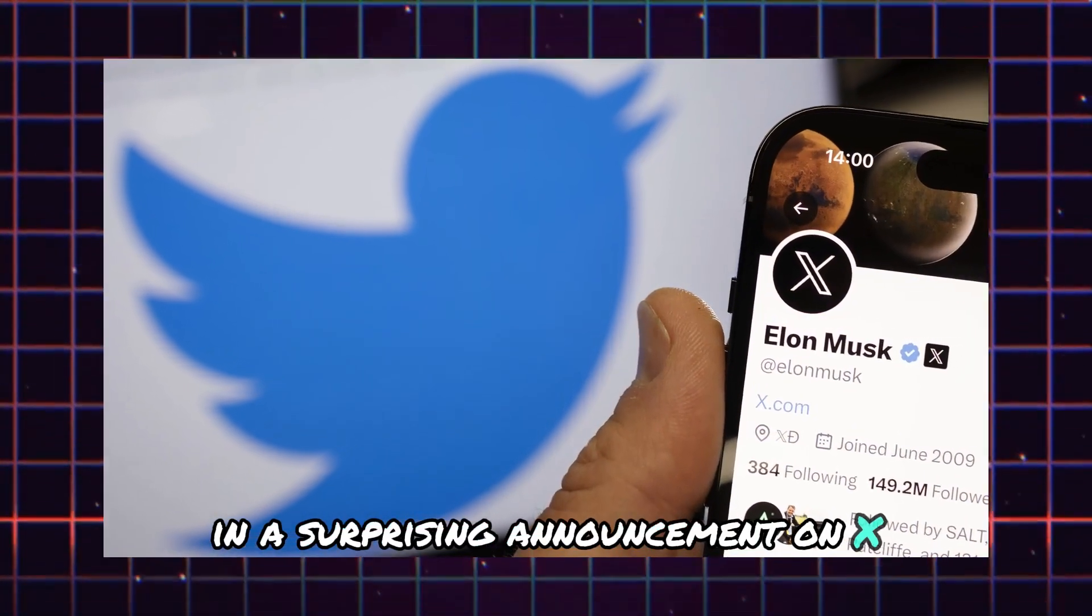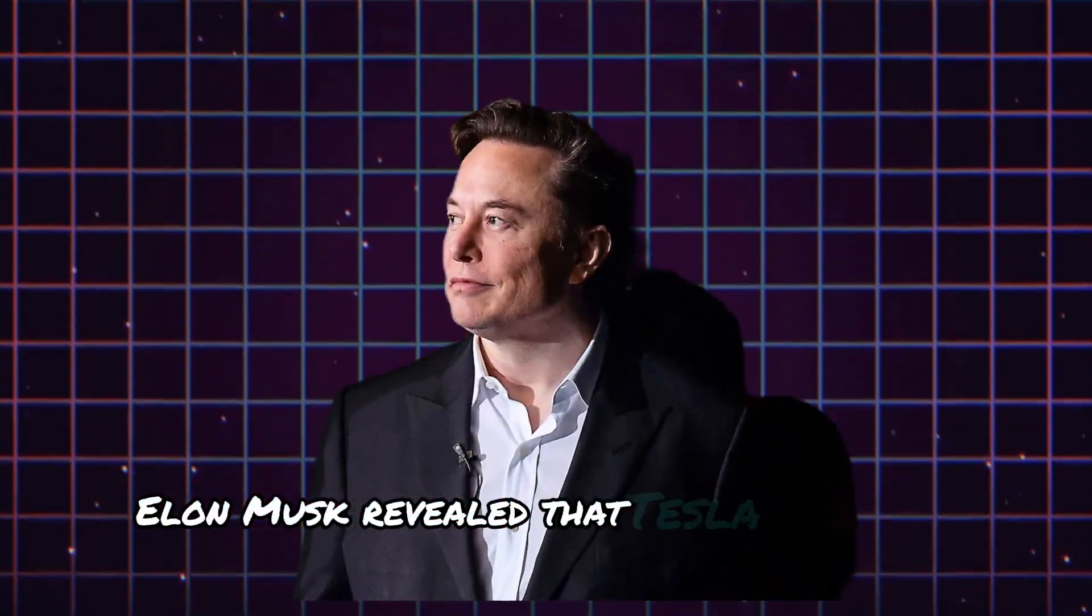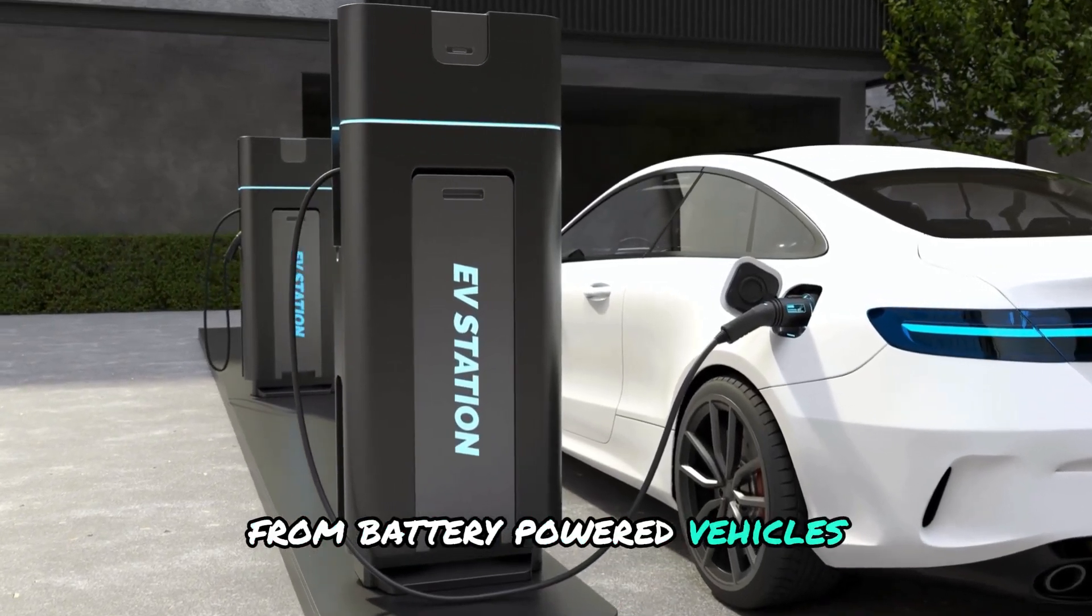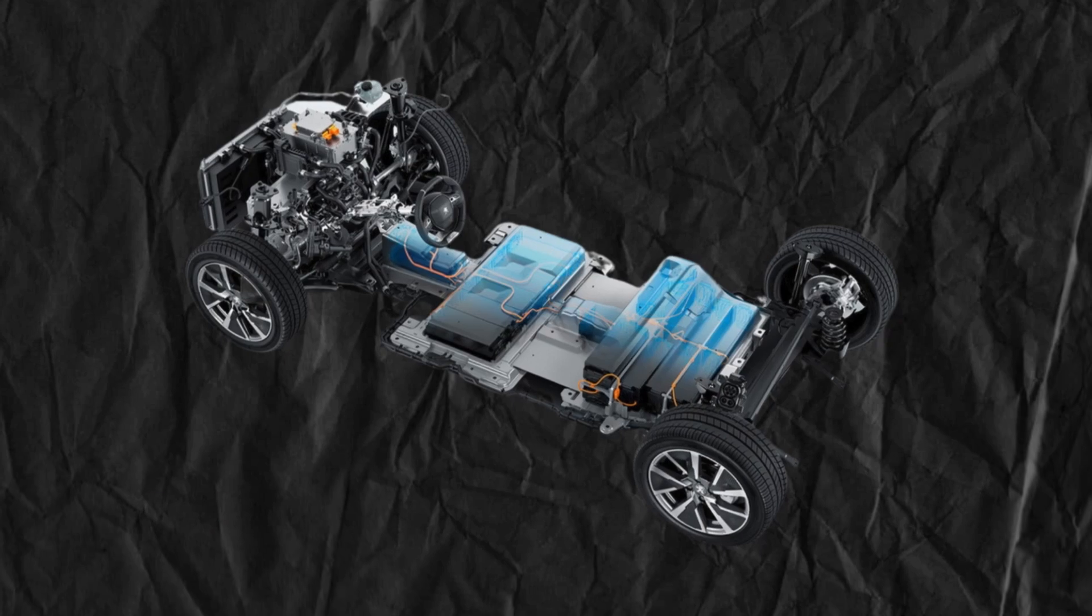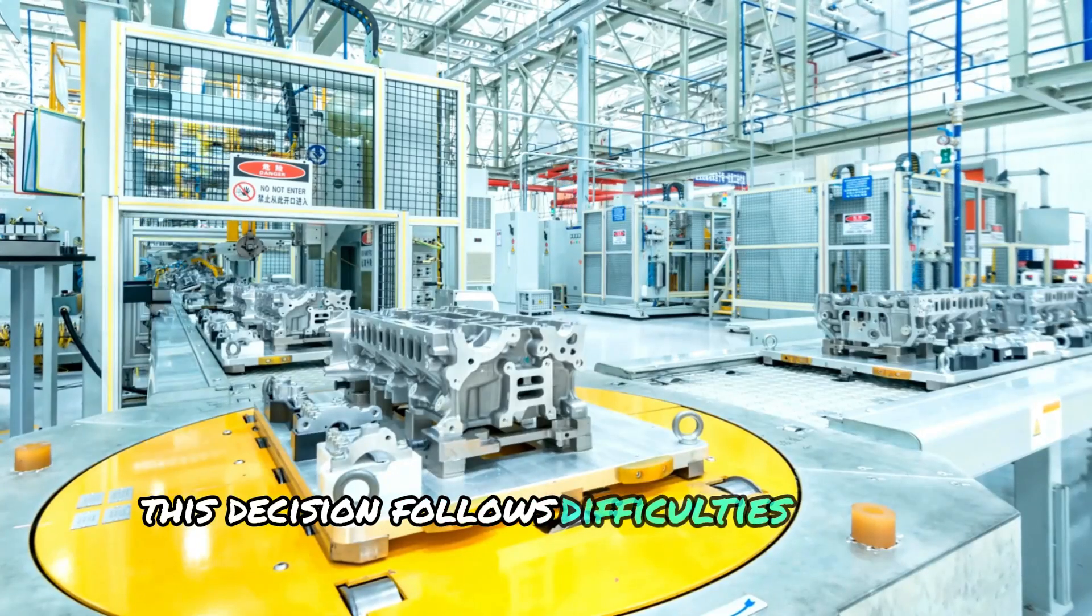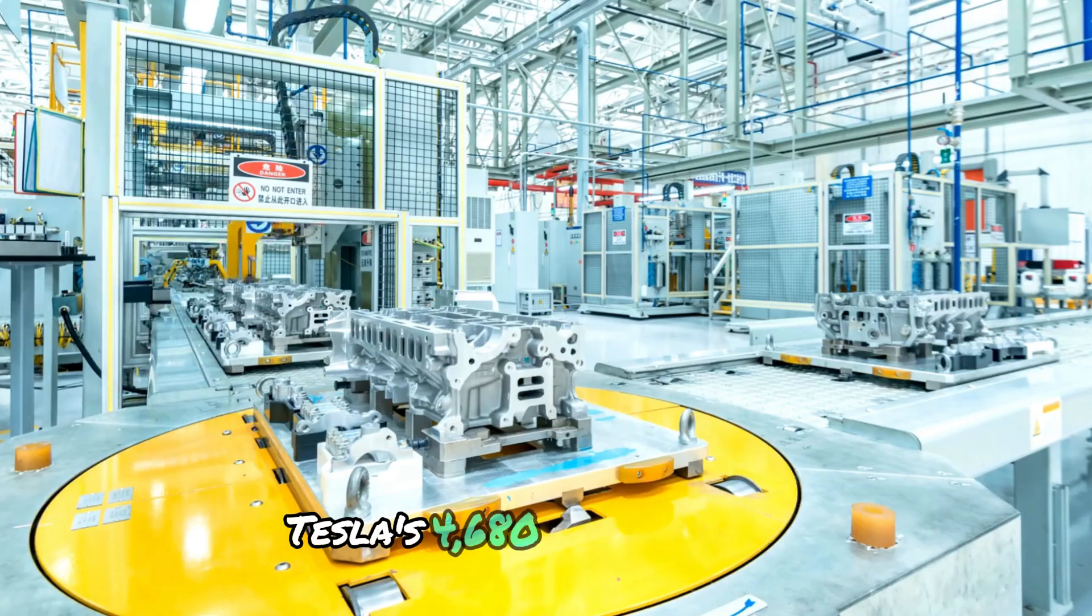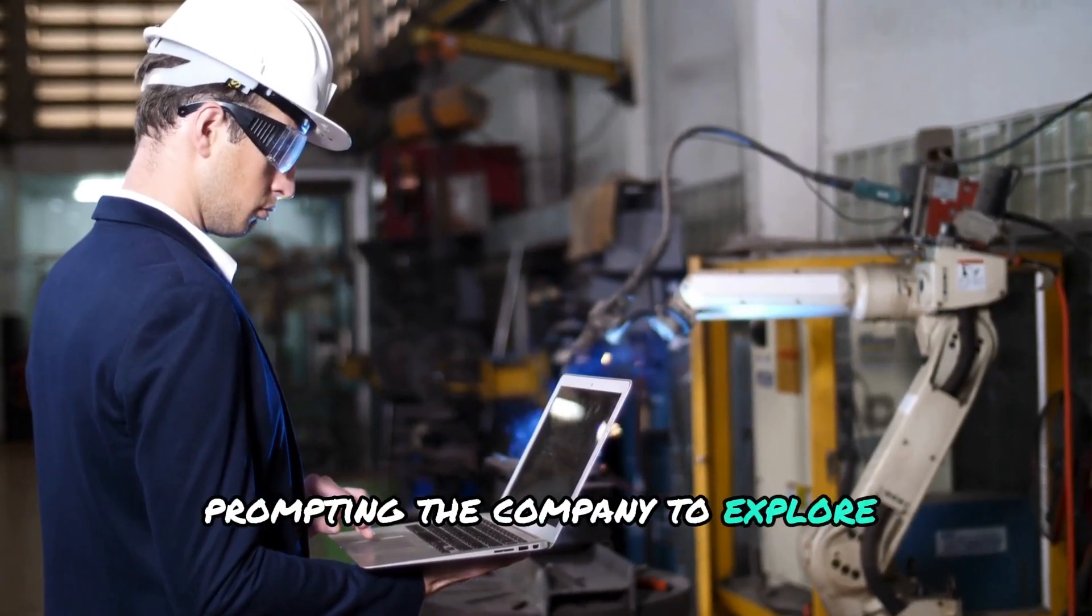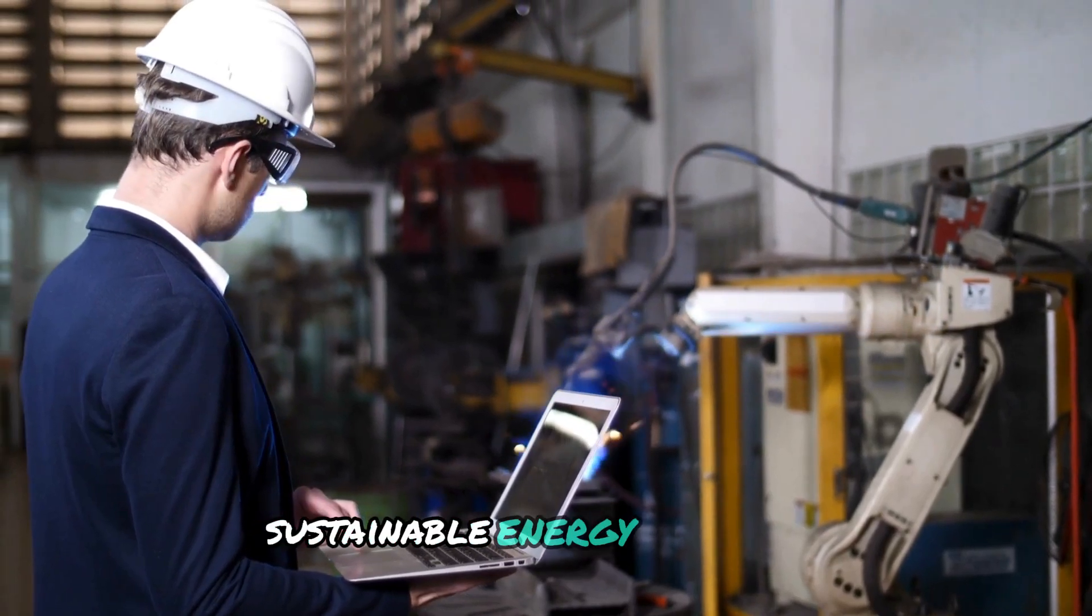In a surprising announcement on X, Elon Musk revealed that Tesla is shifting its focus from battery-powered vehicles to hydrogen fuel cells. This decision follows difficulties in mass-producing Tesla's 4,680 battery cells, prompting the company to explore alternative sustainable energy solutions.